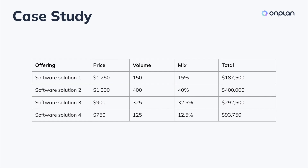The prices shown represent the monthly values of the respective software solution, the volume represents the number of sales of each solution, and the mix is that volume expressed in percentage terms. Finally, the total column represents the revenue in the period, which is a function of multiplying price and volume.